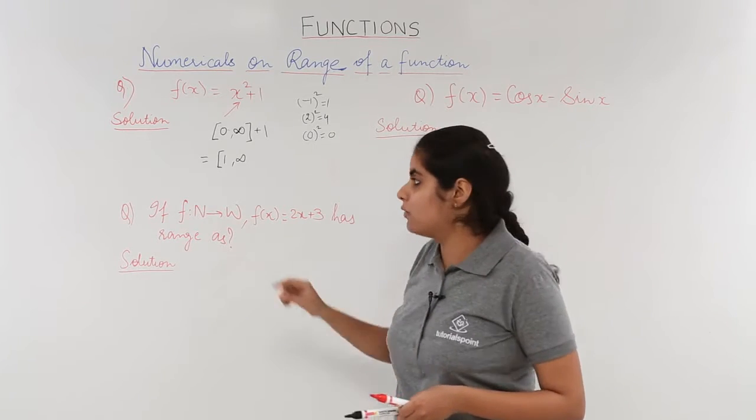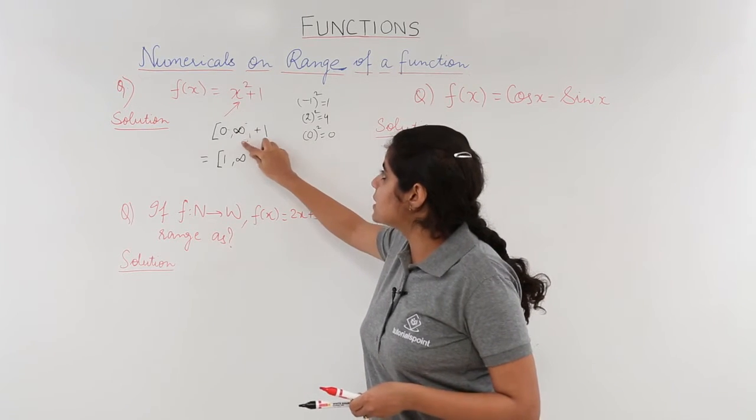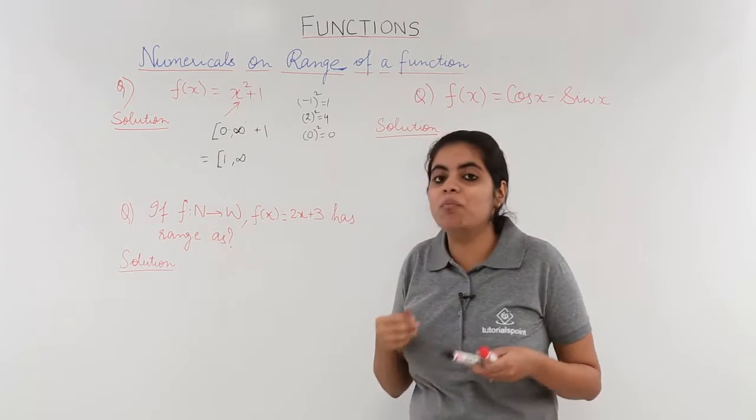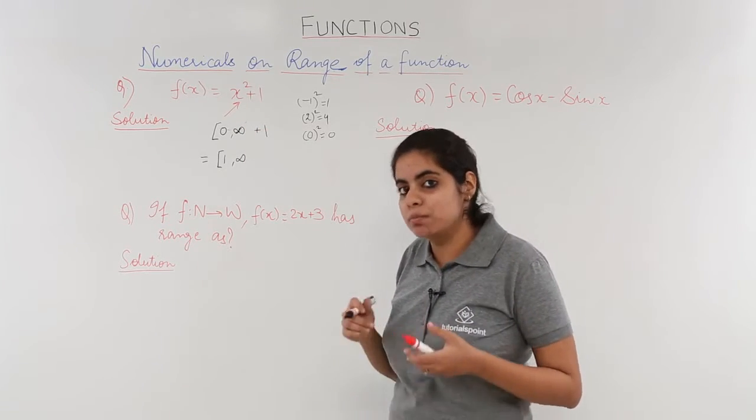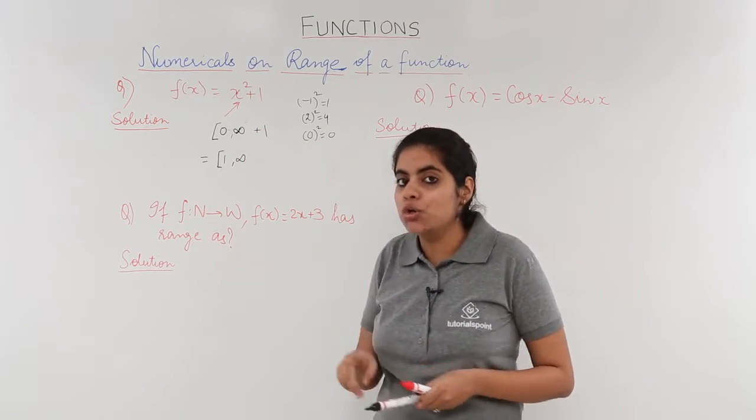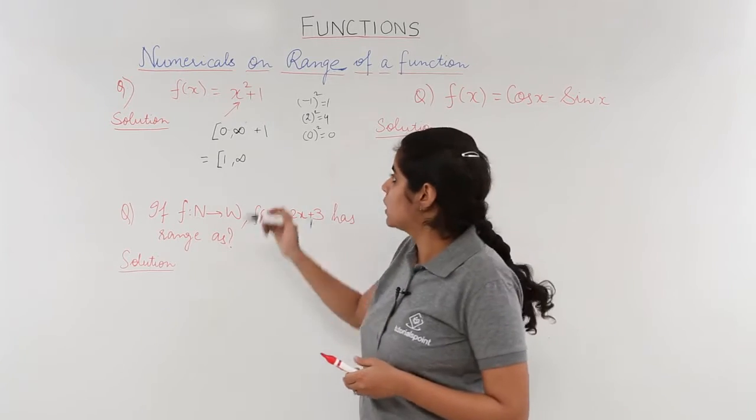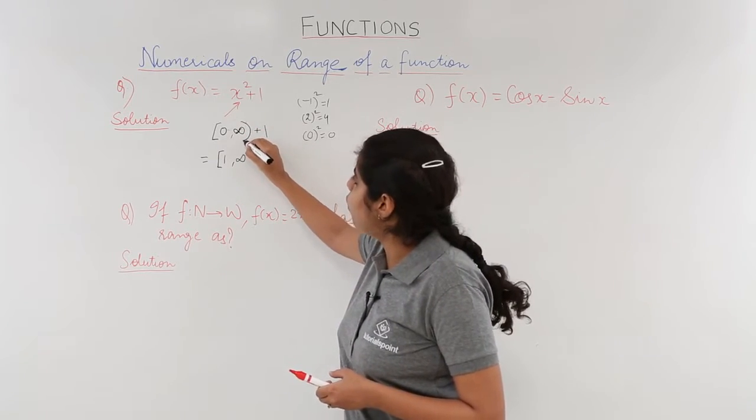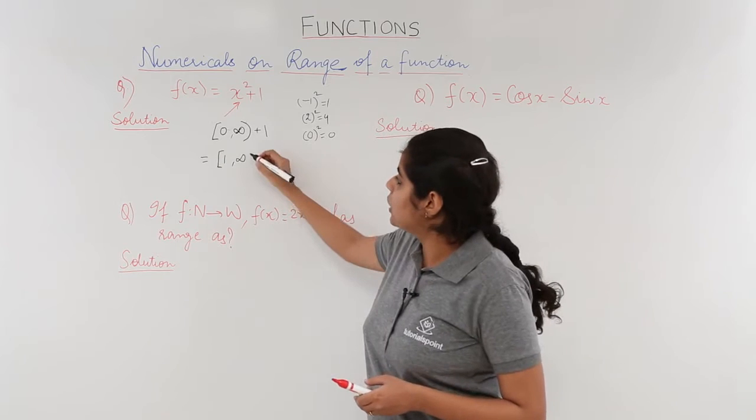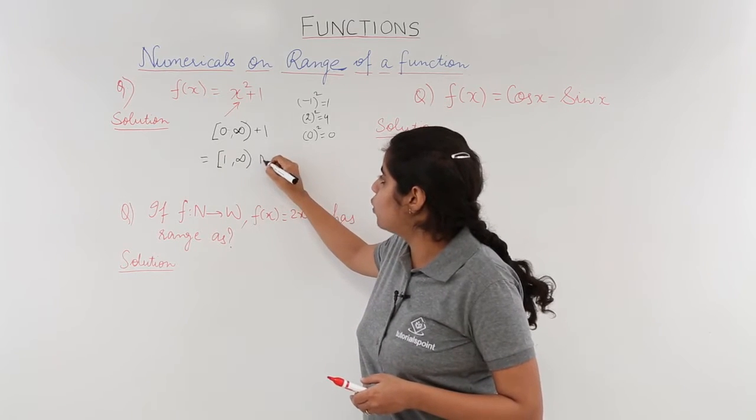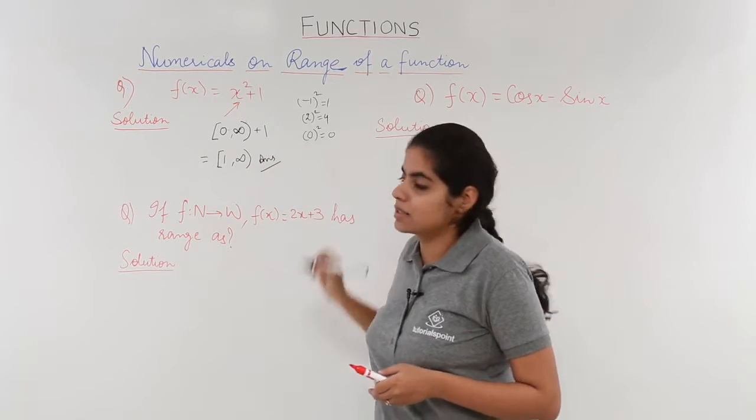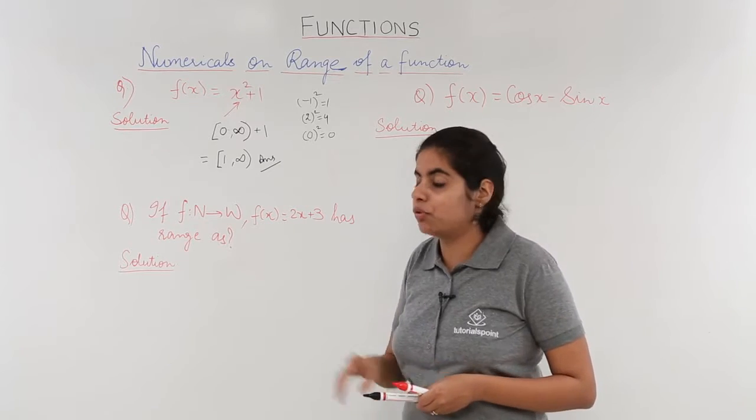And one more thing which we need to consider is that since infinity is not a bounded number, so it is better and advisable not to use big brackets with it. We have to use a small open bracket with it, and here also that is why it would be a small open bracket, and this is my answer for the range for the first question.